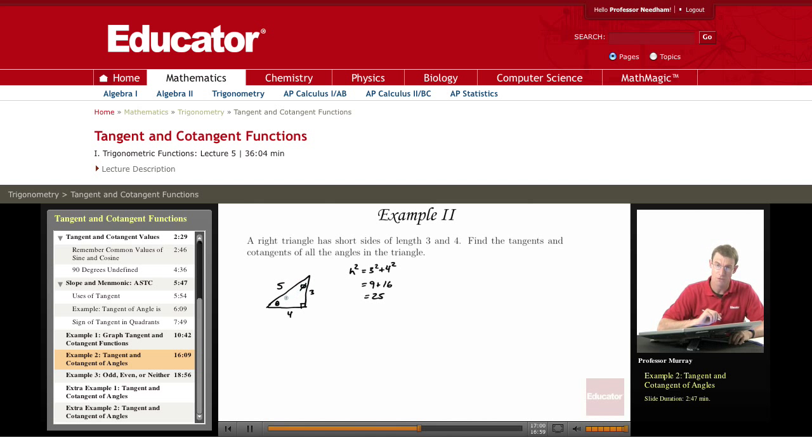Let me figure out, first of all, the tangents of all the angles in the triangle. We're going to use SOH CAH TOA. Remember, tangent equals opposite over adjacent. So the tangent of theta is the opposite over the adjacent, which is 3 over 4.